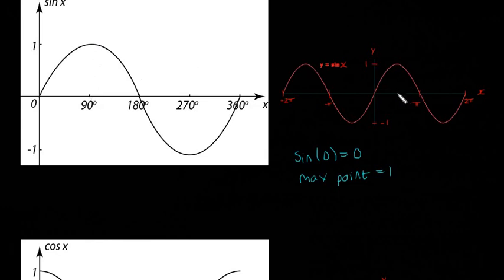That's at 90 degrees or in radians pi over 2. The minimum point is minus 1 and that is at 270 degrees or 3 pi over 2. And then it repeats itself, every 360 degrees.